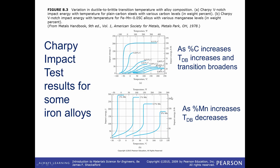Other alloying elements have a different effect. The bottom chart shows how the ductile to brittle transition changes with increasing amounts of manganese. In this iron-carbon-manganese alloy with 0% manganese, the ductile to brittle transition temperature is around 120 degrees C. As the amount of manganese increases, the ductile to brittle transition temperature decreases. Generally you want a low ductile to brittle transition temperature so that the material will be ductile at your operating range.